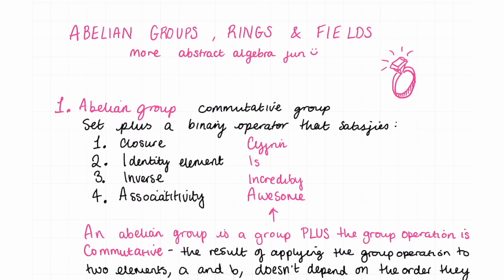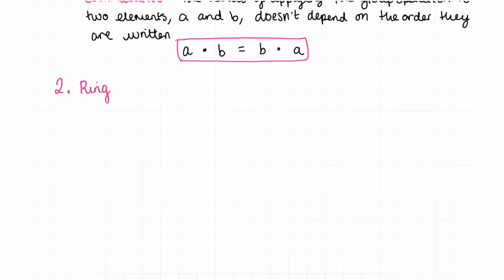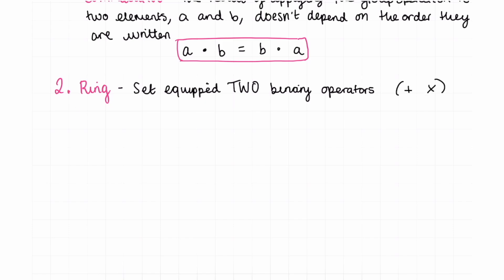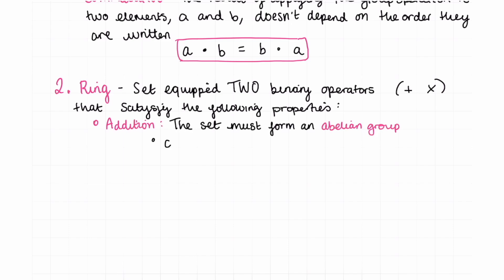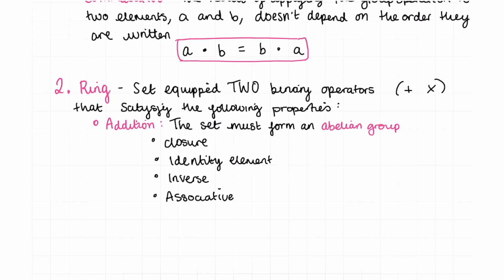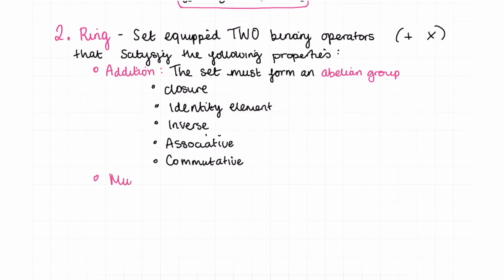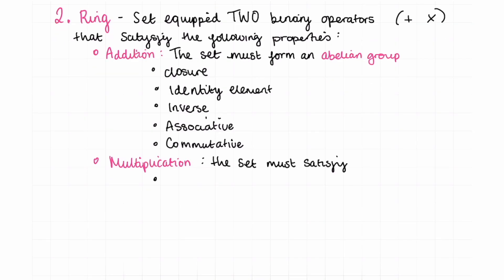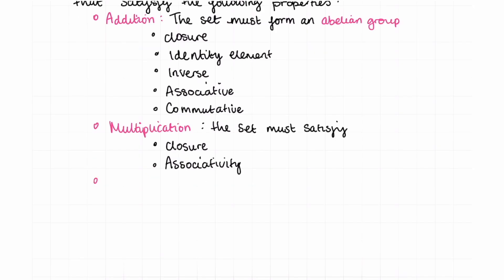These are just ways to describe our sets plus binary operators and how they behave. The second algebraic structure is a ring. A ring is a set equipped with two binary operators — in the context of cryptography and ZK proofs, usually addition and multiplication. Under the first operator, which is usually addition, the set must form an abelian group: closure, an identity element, every element has an inverse, associativity, and commutativity. Under the second operator, which is usually multiplication, the set must satisfy only closure and associativity.